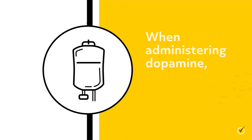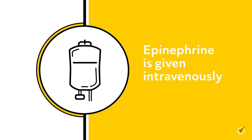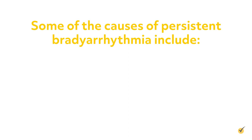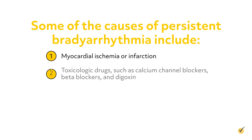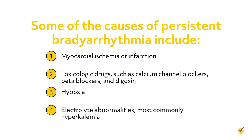When administering dopamine, it is given intravenously at 5-20 mcg per kg per minute, titrated to the patient's response, and then slowly tapered to the patient's tolerance. Epinephrine is given intravenously at 2-10 mcg per minute and titrated to patient response. Some causes of persistent bradyarrhythmia include myocardial ischemia or infarction, toxicologic drugs such as calcium channel blockers, beta blockers, and digoxin, hypoxia, and electrolyte abnormalities, most commonly hyperkalemia.